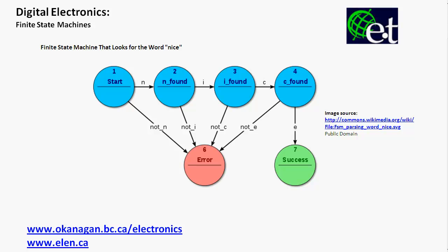The topic of today's video is finite state machines. A state machine is simply something that has different states, has a means of changing from state to state, and has some rules for how it changes from state to state. We see a reasonably complex example here — we're looking for the word 'nice,' and you can see that there are different states.